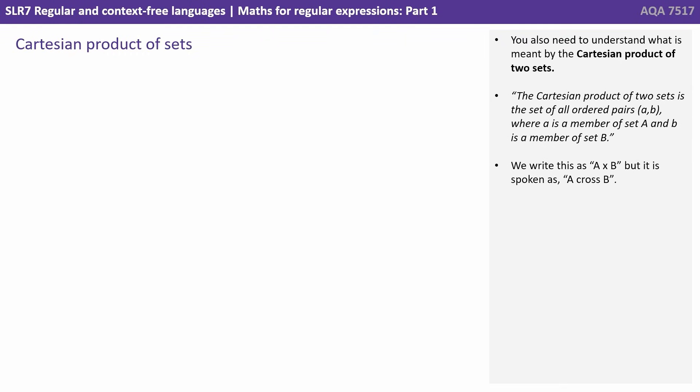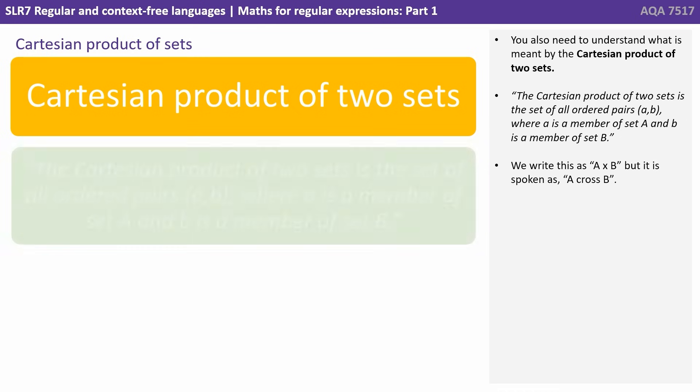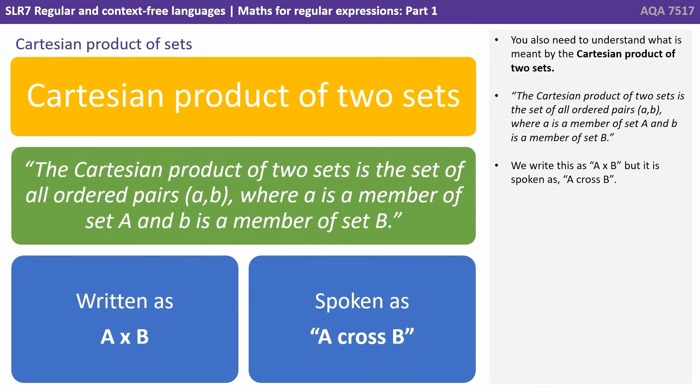You will also need to understand what is meant by the Cartesian product of two sets. The Cartesian product of two sets is the set of all ordered pairs A and B where A is a member of set A and B is a member of set B. We write this as A cross B and this is how we say that when we speak it out in English.